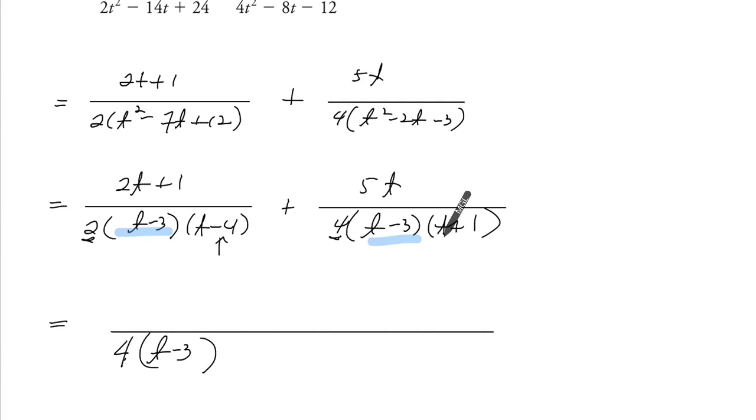And now we just need to further add these two factors. Because this expression here has two times by t minus 3, t minus 4. Also has four times by t minus 3, t plus 1.